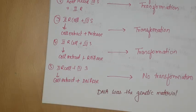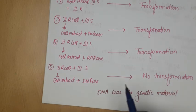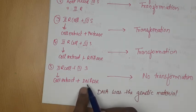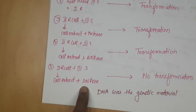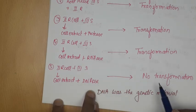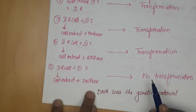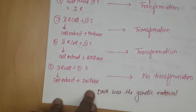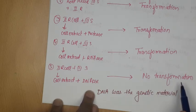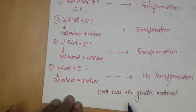They concluded that DNA is the genetic material that transfers from one generation to another. When treated with DNase, DNA is degraded and hydrolyzed — no DNA is present — and transformation does not take place. So they concluded DNA was the genetic material. Thank you for watching.